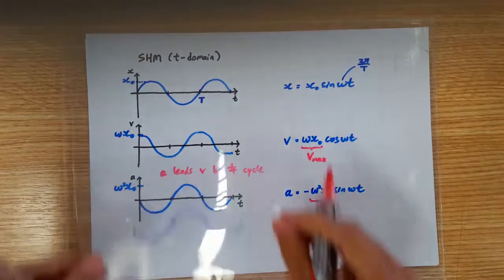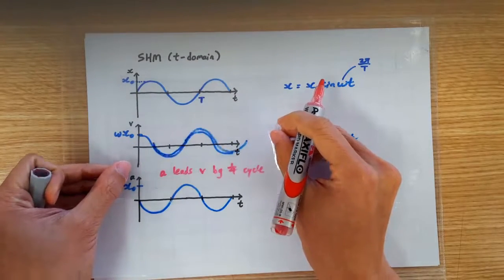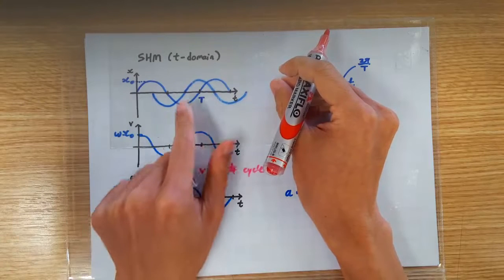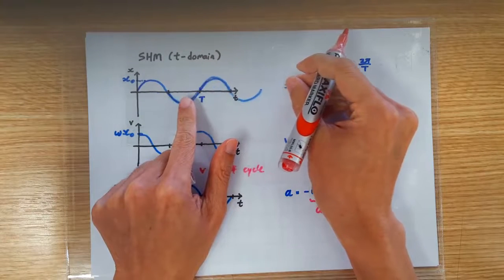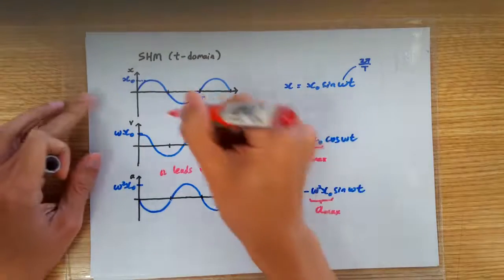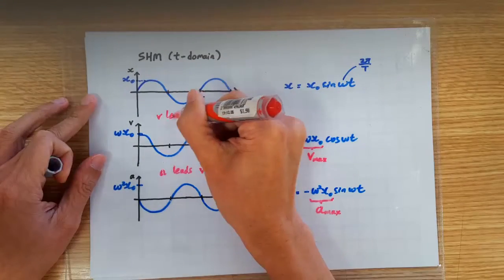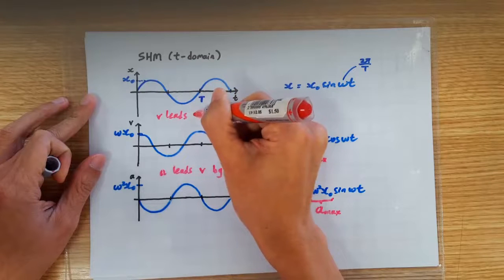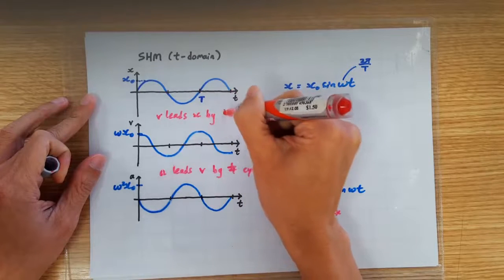Likewise, the velocity time graph is leading the displacement time graph by a quarter of a cycle. So that tells us in an SHM, the velocity is always leading its own displacement by a quarter of a cycle.